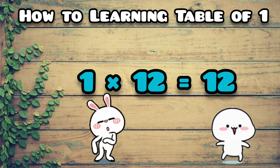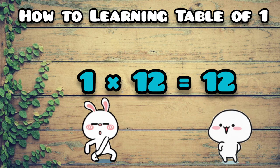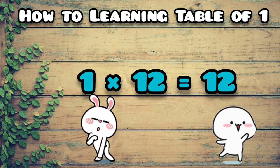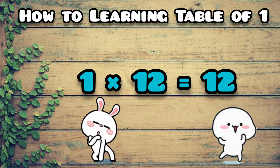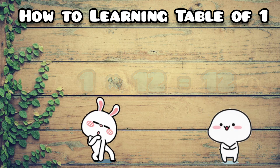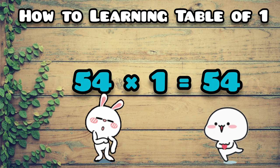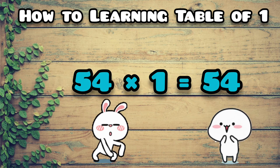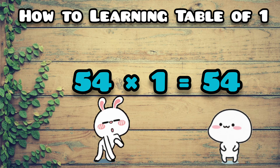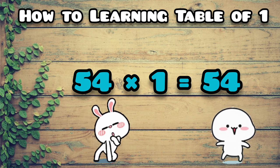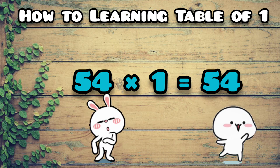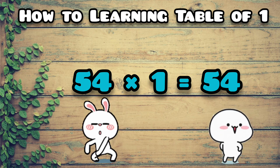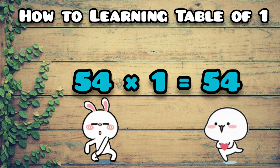This is the multiplication table of 1. The mathematical formula is: any number multiplied by 1, the answer is the same number. For example, 54 into 1 equals 54. 55 into 1 equals 55. Same answer.